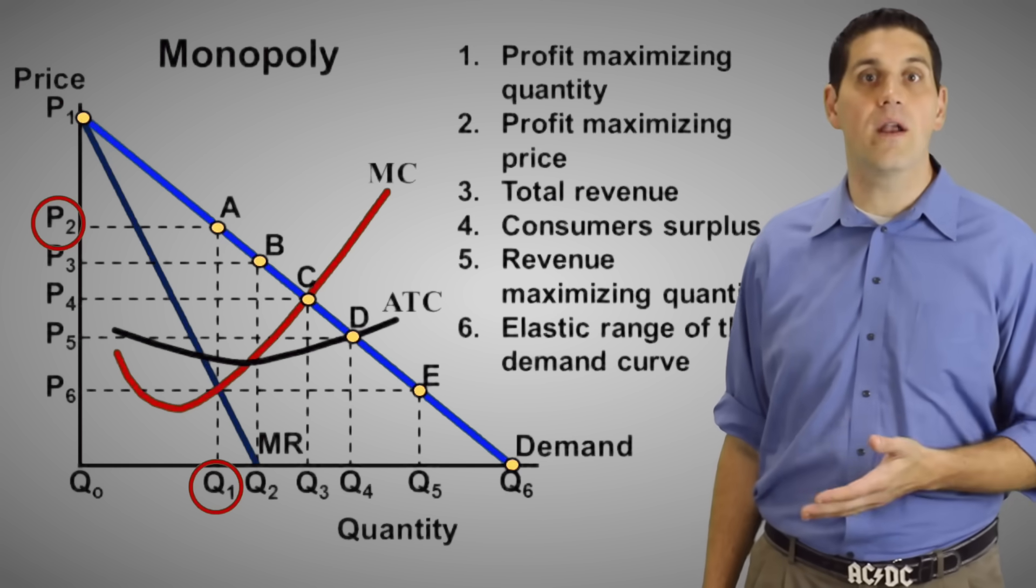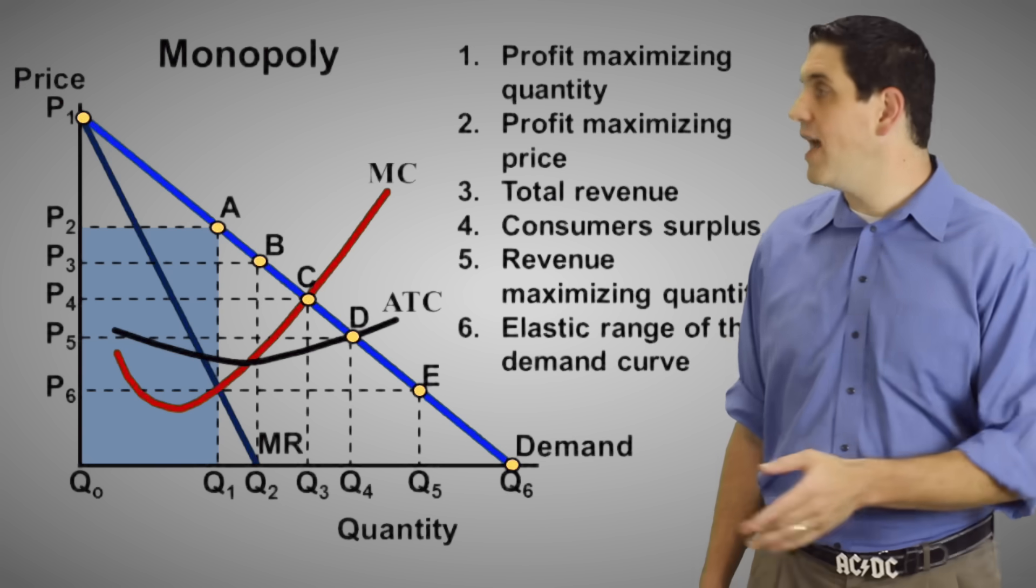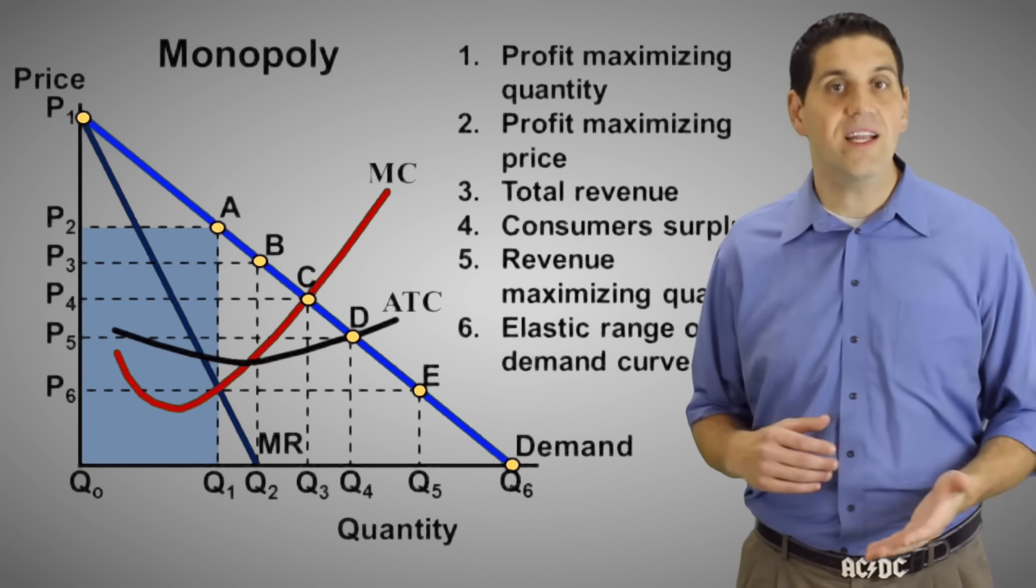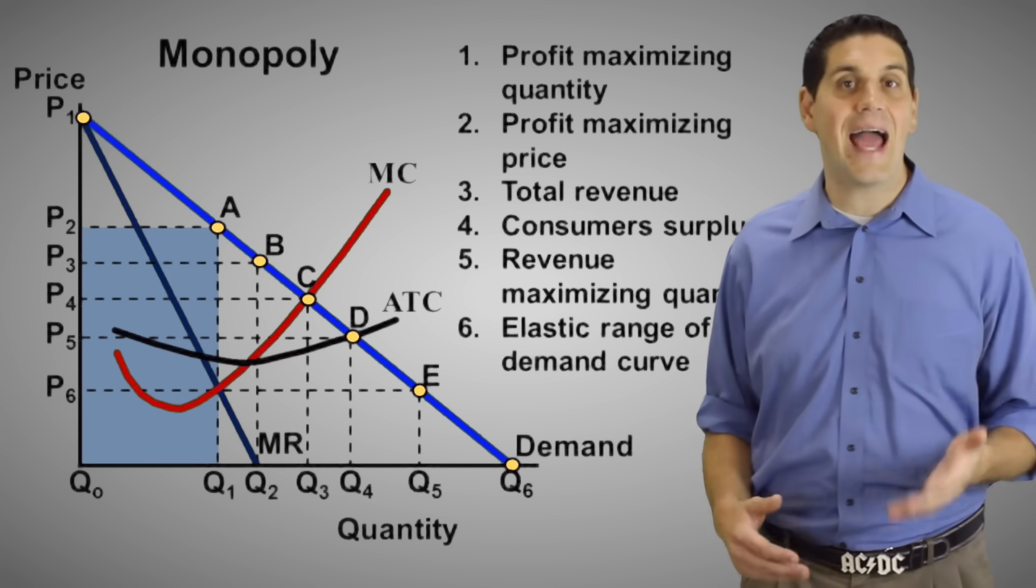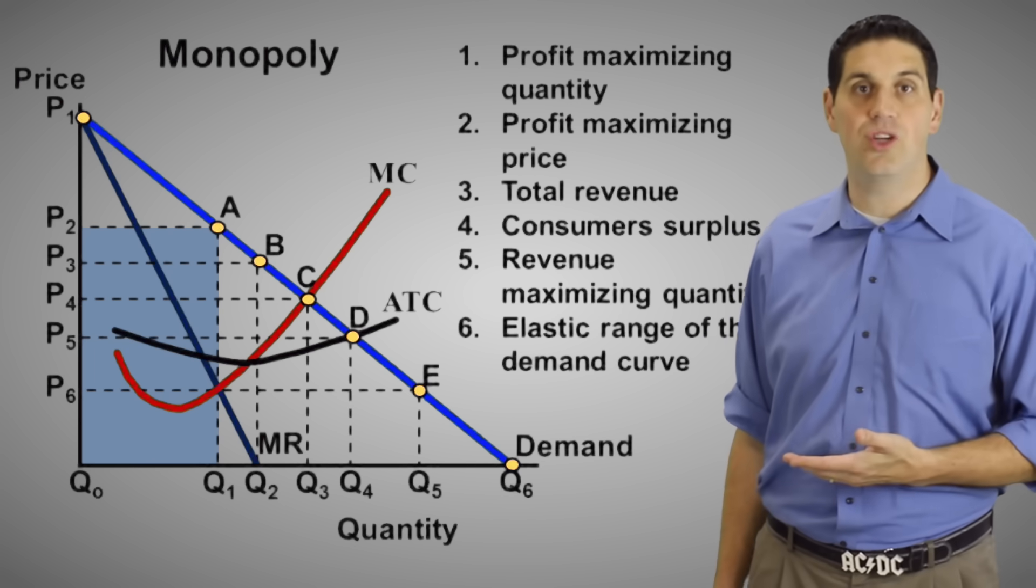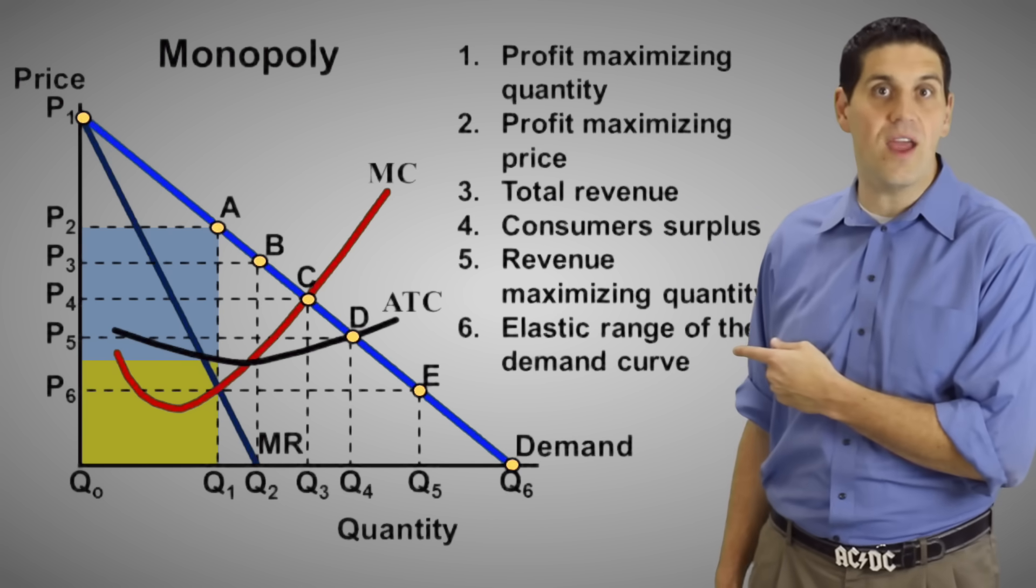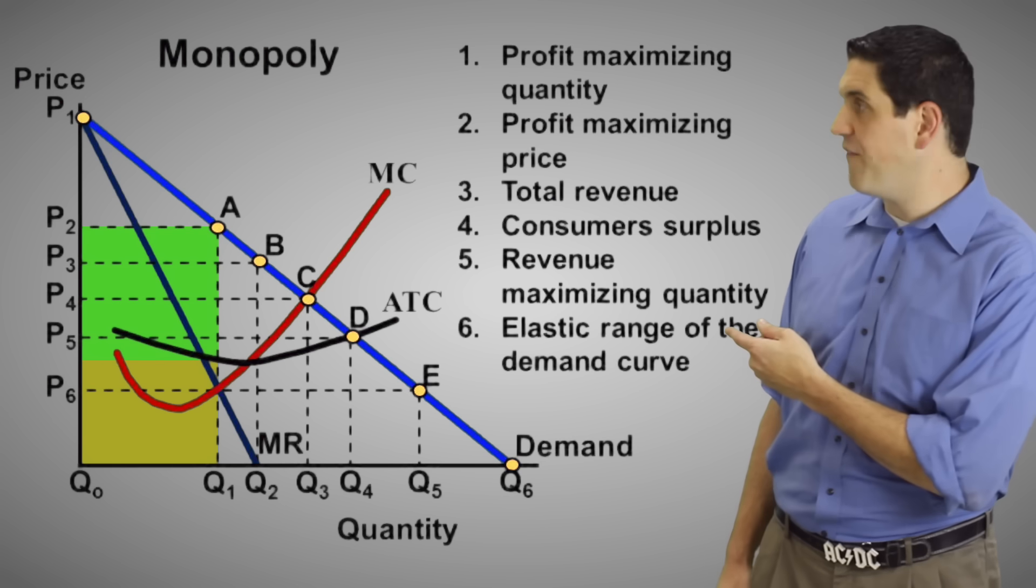The total revenue is just the price times the quantity. So it's this rectangle right here. It's the rectangle of P2 A, Q1, and Q0. So finding total revenue, total cost, and profit on the graph is exactly the same skill that you applied in perfect competition. To figure out the total cost, you're going to go up to the ATC and over. And so it's right there. And so what's left over must be profit, which is right there.